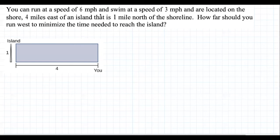You can run at the speed of 6 miles per hour and swim at the speed of 3 miles per hour and are located on the shore 4 miles east of an island that is 1 mile north of the shoreline. How far should you run west to minimize the time needed to reach the island?